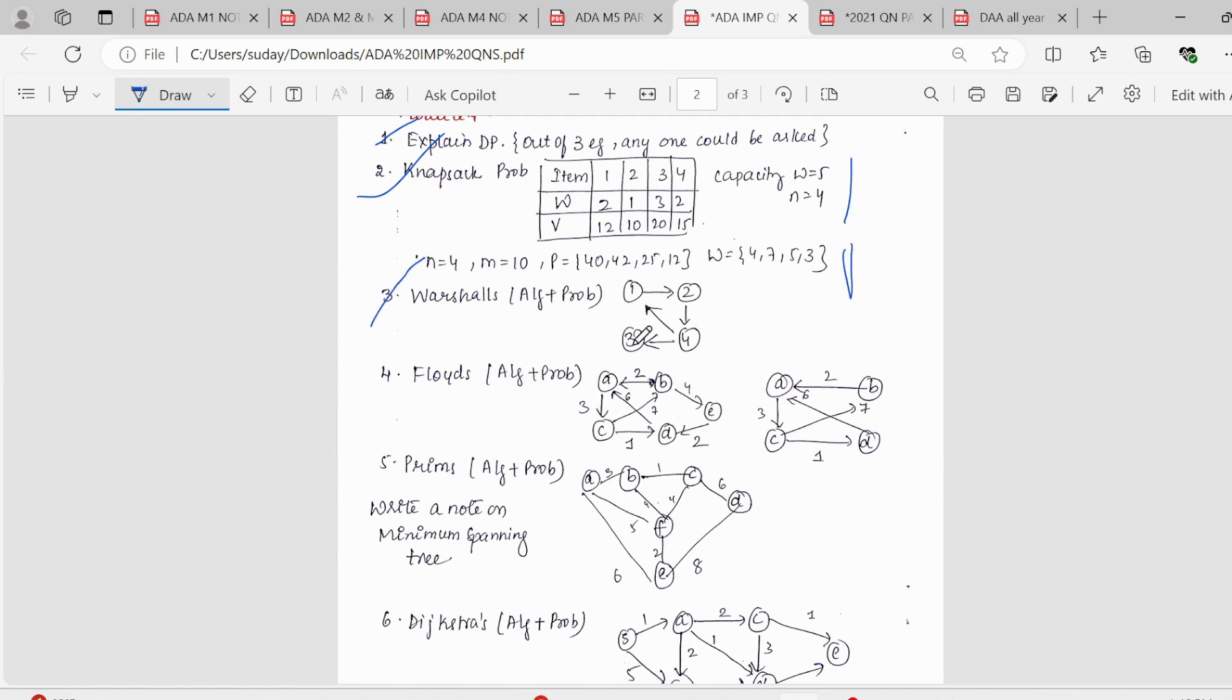Next we have Warshall's problem. Warshall's algorithm, either they can give in the adjacency matrix way, or they can give a graph. So however it's given, this is the standard question which is asked always. Next in Floyd's algorithm, again, algorithm plus problem. So this question was given the last time. And if you look at the standard problem here, we have just inserted E here, that's it. But this is the standard question. So I've solved all these questions in my YouTube video. So make sure you cover the playlist properly.